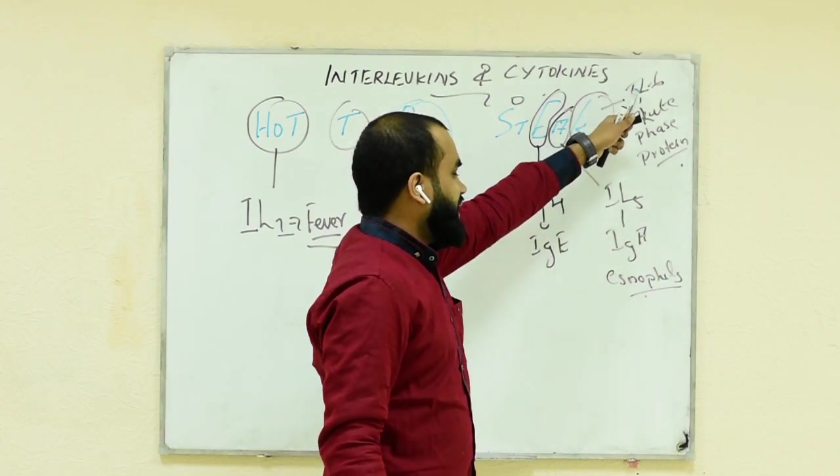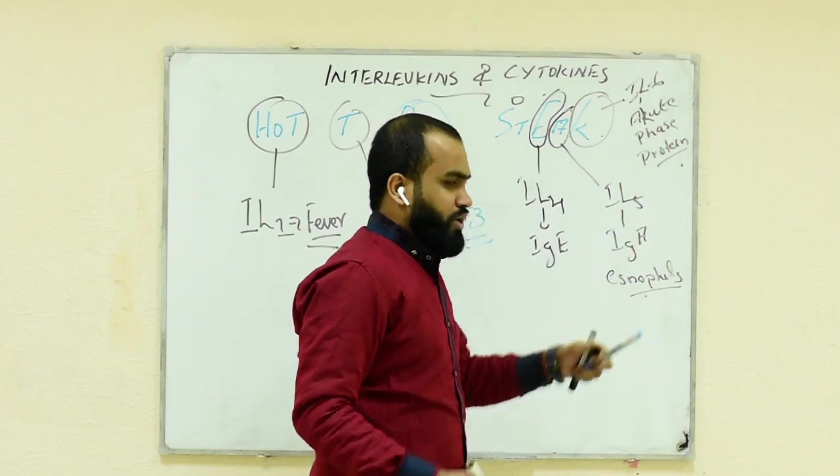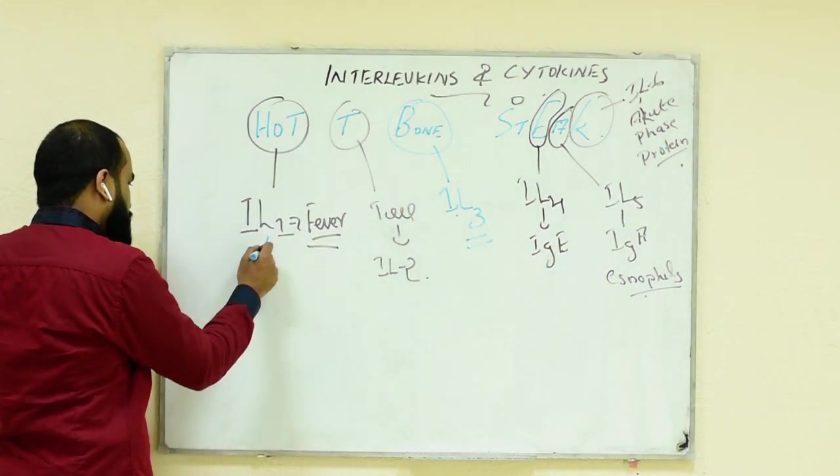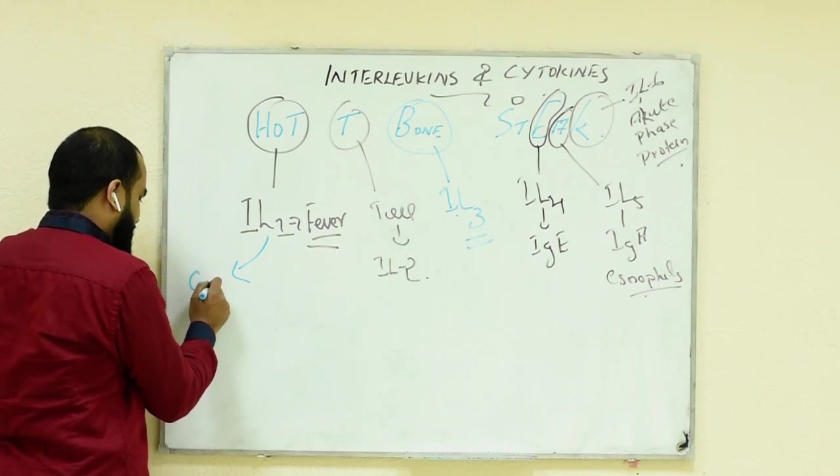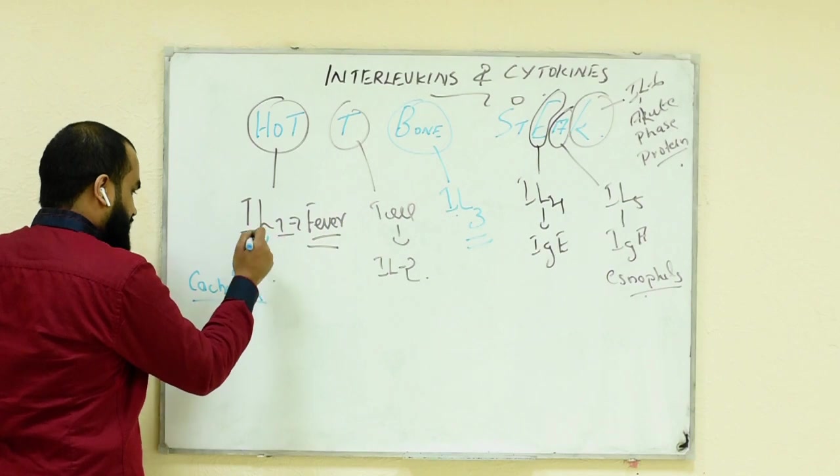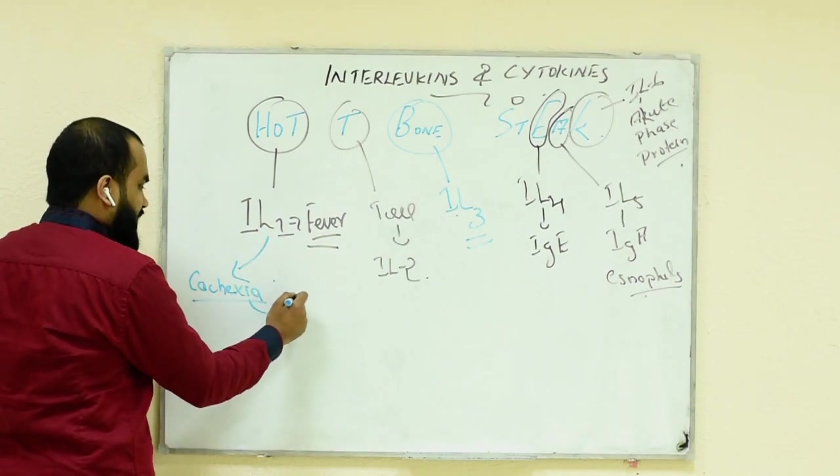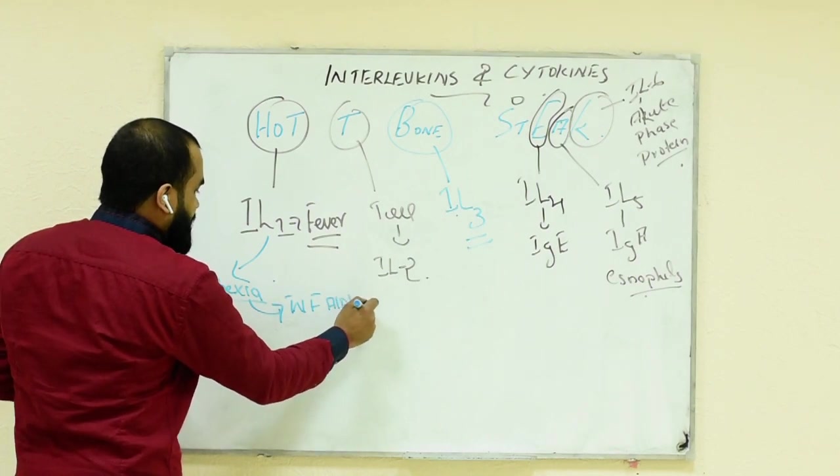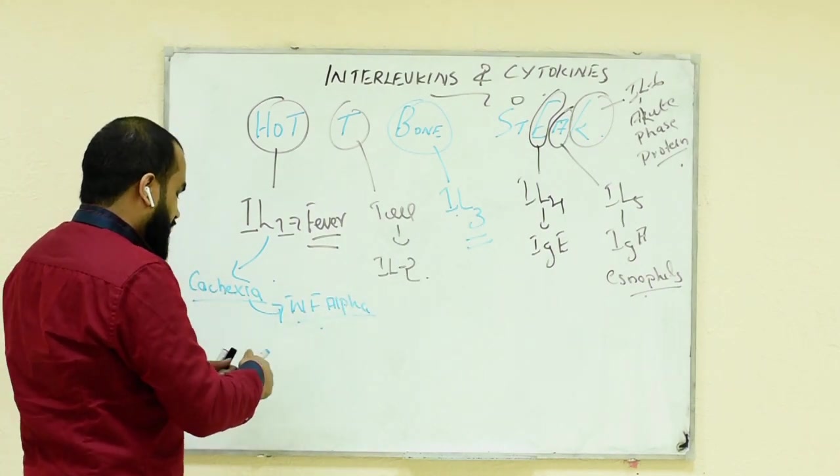I am adding something here: interleukin 1 also controls cachexia in cancer. We used to have cachexia and weight loss. This cachexia is also controlled by TNF alpha, tumor necrosis factor alpha. Remember it.